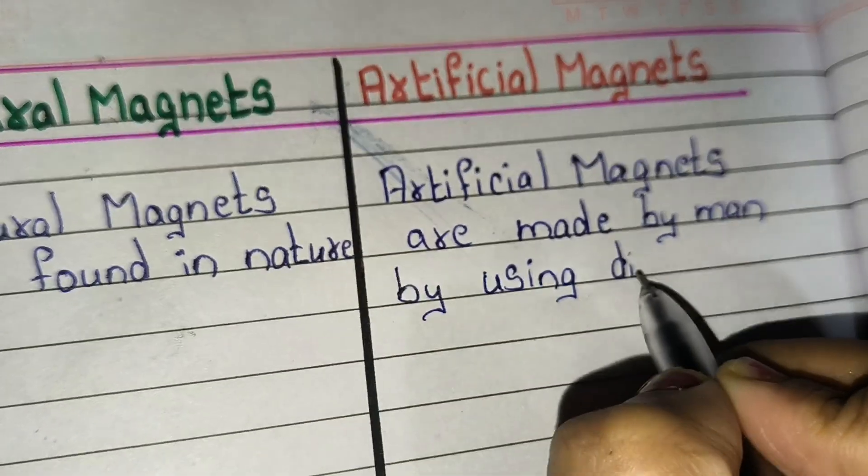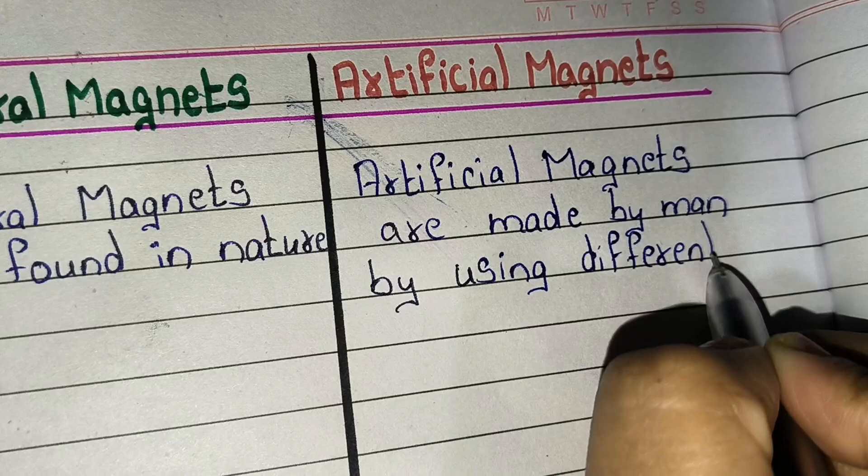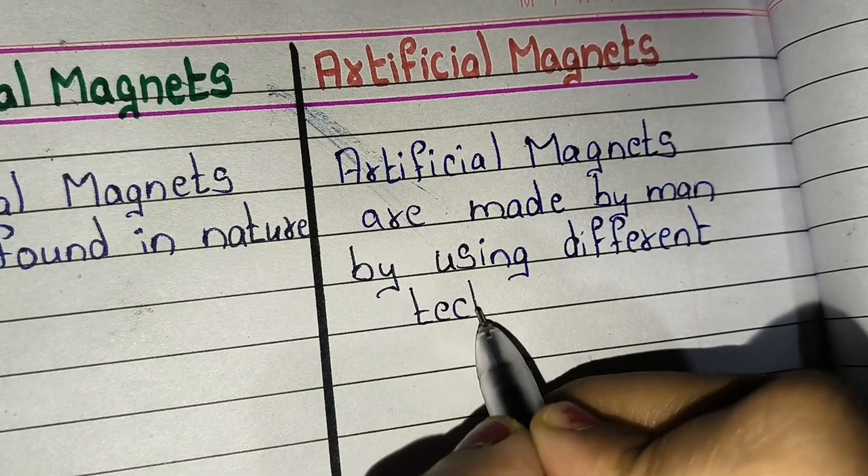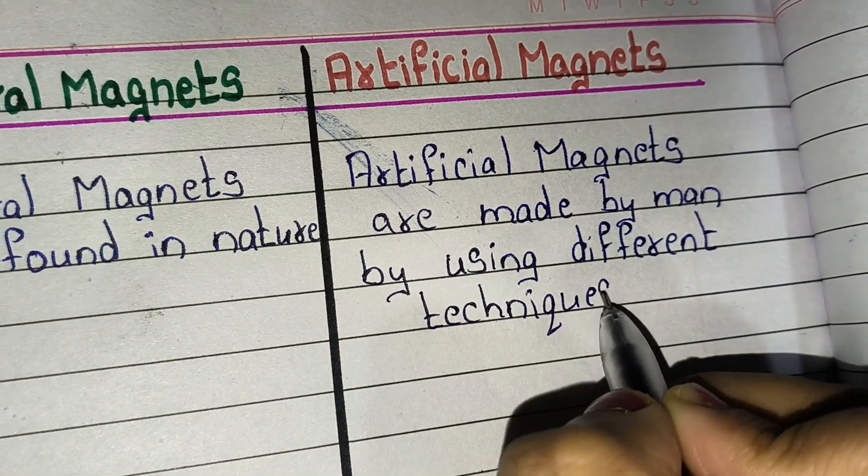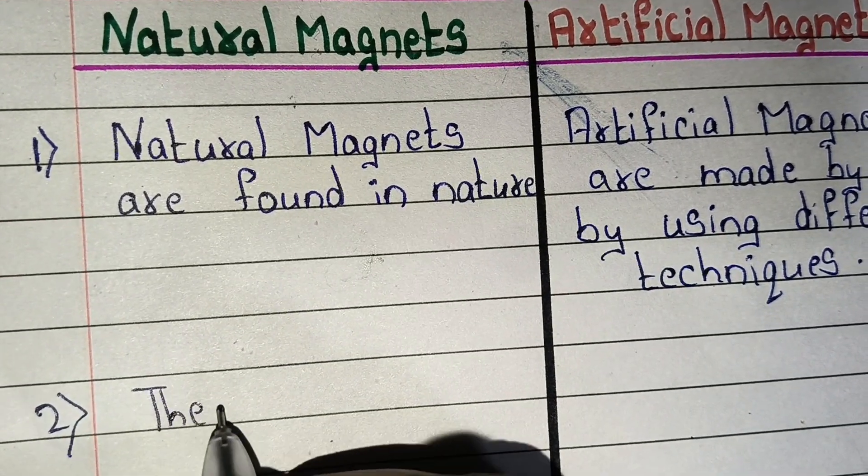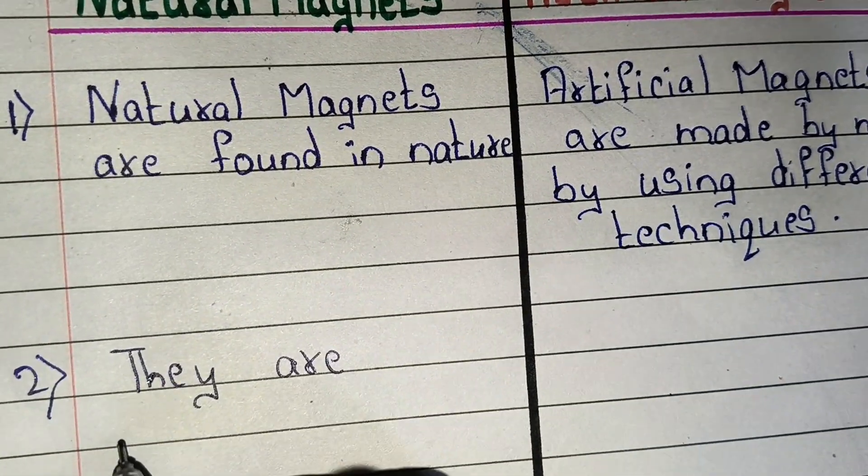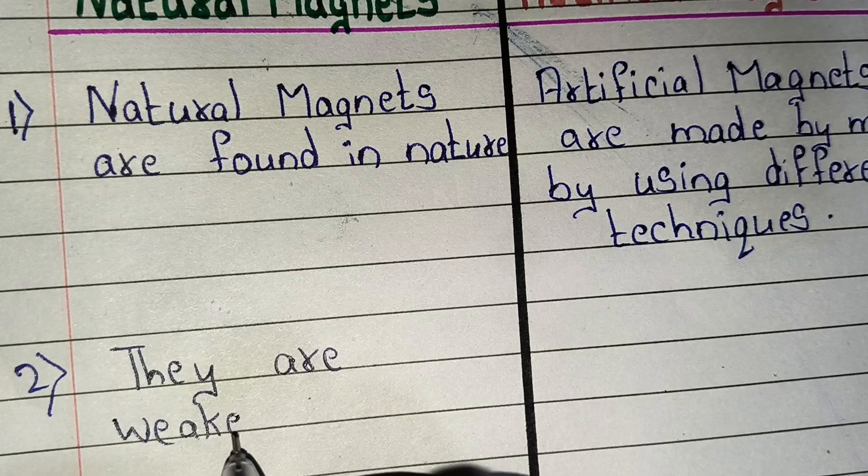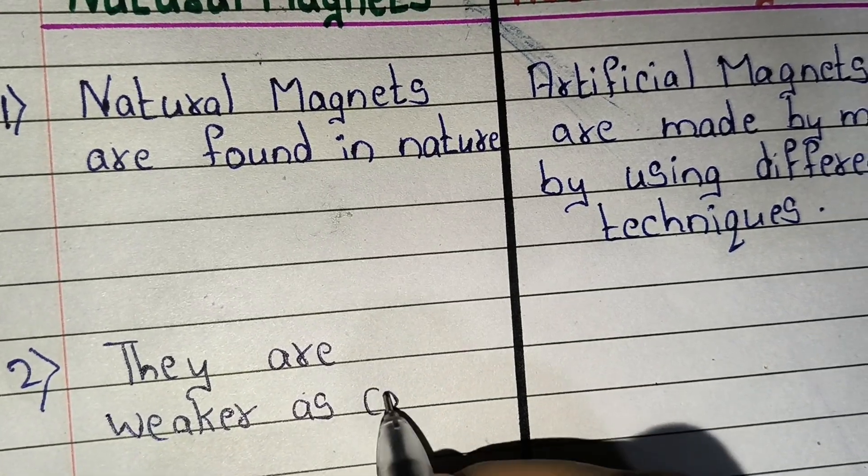Artificial magnets are made using different techniques. Second point: natural magnets are weaker